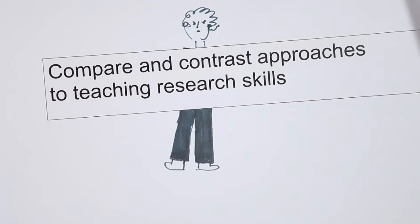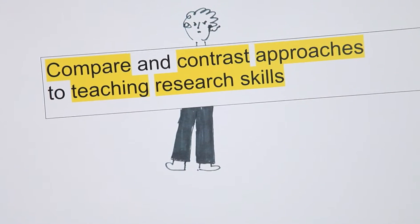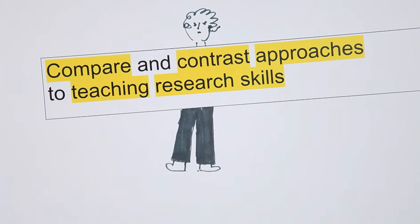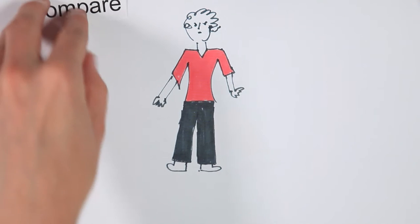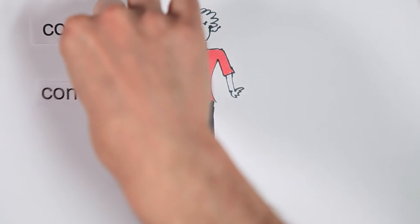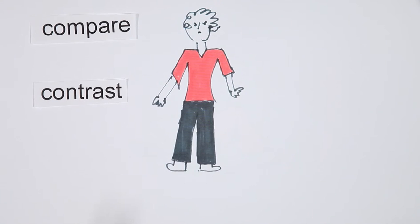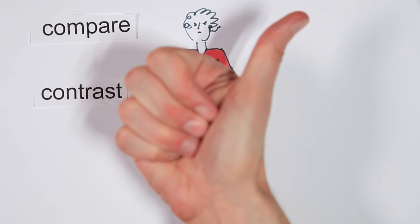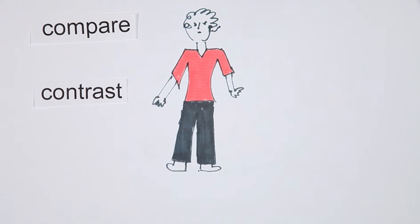So Dave has his essay title but if he were writing his dissertation he would need to write his own. First of all Dave highlights the words which are the most important to his research. He needs to make sure he understands the process words such as compare and contrast. There are plenty of study skills books and websites that explain these academic terms.